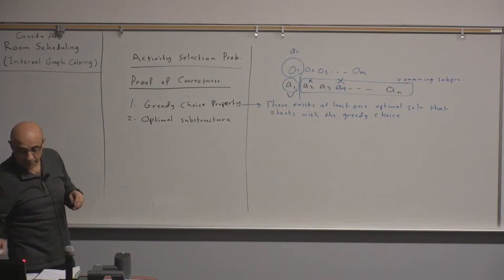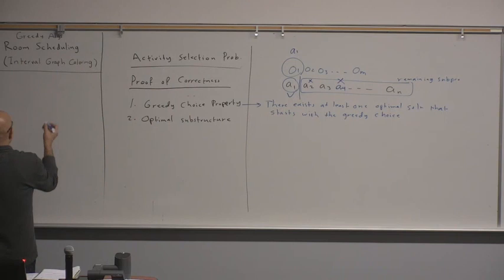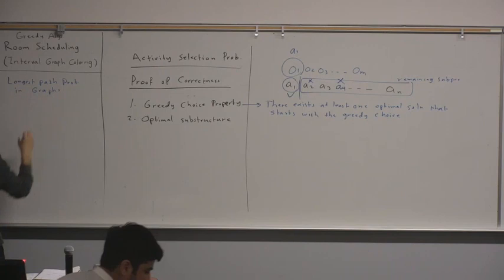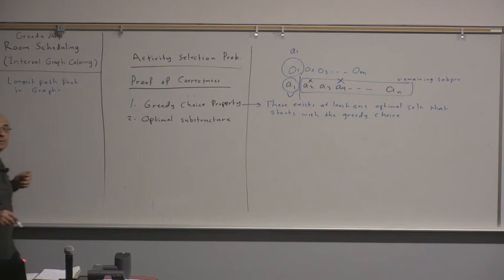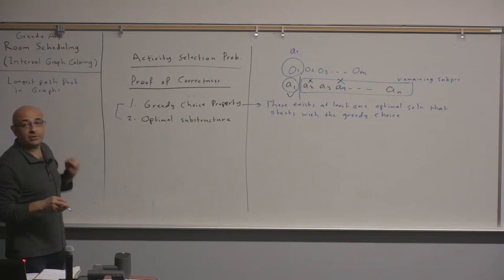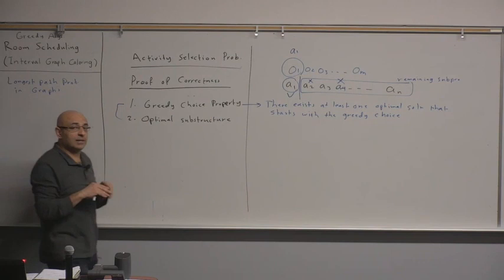So consider the longest path problem in graphs. There was a clarification question: to prove that something can be solved by a greedy algorithm, does it need to satisfy only the greedy choice property, or both properties? It has to satisfy both. The greedy choice property tells you that your first choice can be the greedy choice, but it doesn't tell you that you can continue doing the same thing repeatedly.